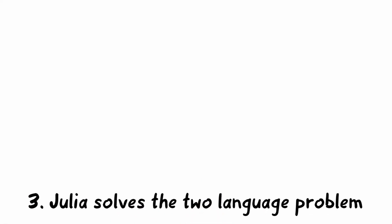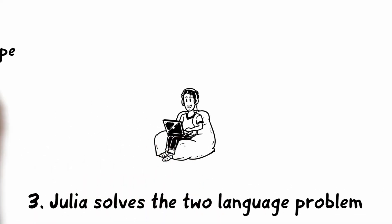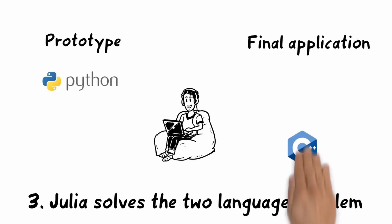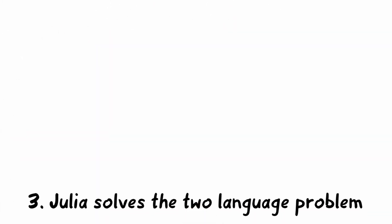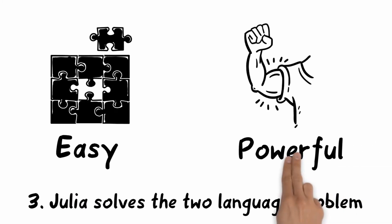3. Julia solves the language problem. Today, many software developers prototype their programs in easy to use dynamic languages like Python, and after testing, they transfer their code to a more powerful language like C to achieve better performance. This process wastes a lot of resources. Julia solves this problem by being easy to use, but at the same time super fast and powerful.